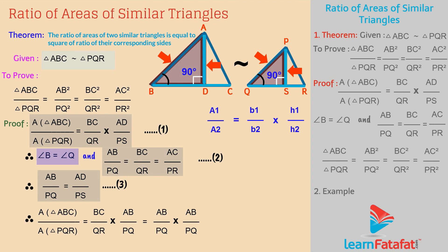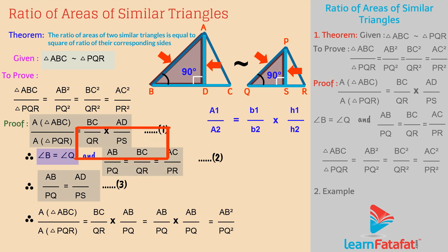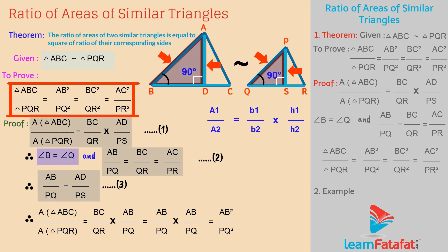Therefore, area of triangle ABC divided by area of triangle PQR is equal to AB square divided by PQ square. But AB divided by PQ is equal to BC divided by QR is equal to AC divided by PR. Therefore, area of triangle ABC divided by area of triangle PQR is equal to AB square divided by PQ square is equal to BC square divided by QR square is equal to AC square divided by PR square. Hence, the ratio of areas of two similar triangles is equal to the square of the ratio of their corresponding sides.